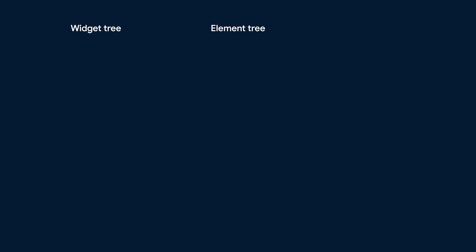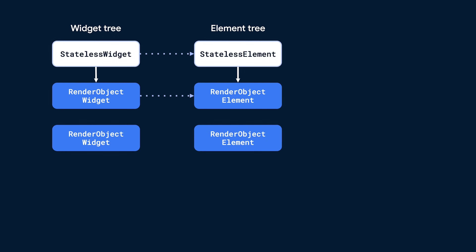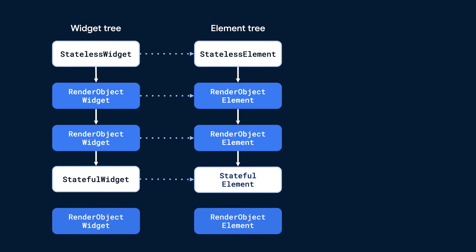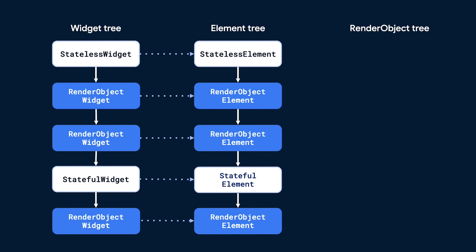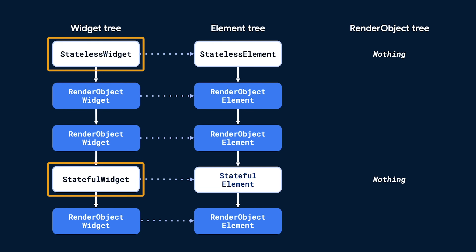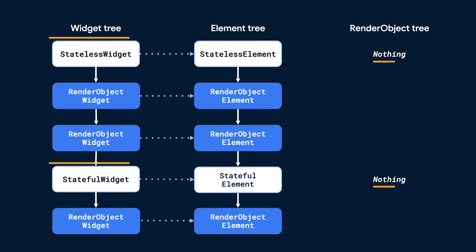Also recall in episode two how we examined the relative shapes of the widget and element trees and saw that they always have a perfect one-to-one relationship. Consider this widget tree and its associated element tree — as expected, they have the same shape. But how will their render tree look? The answer is that it is a pruned version of the first two trees. Anywhere in the widget tree where you see a stateless or stateful widget, the render tree is empty.